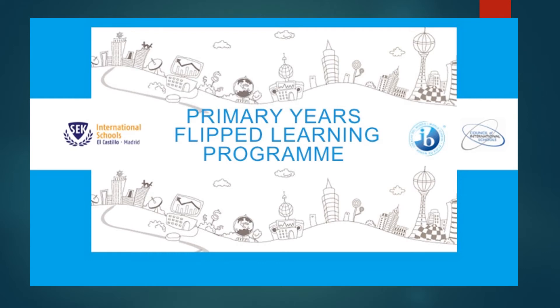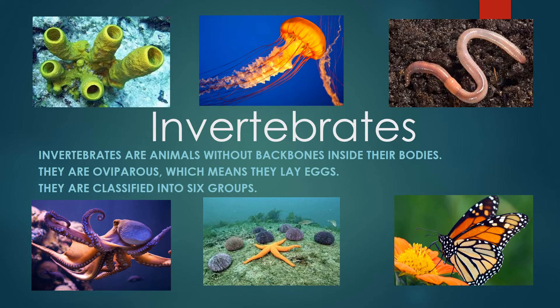Premier Year's Flip Learning Program. Invertebrates are animals without backbones inside their bodies. They are oviparous, which means they lay eggs. They are classified into six groups.